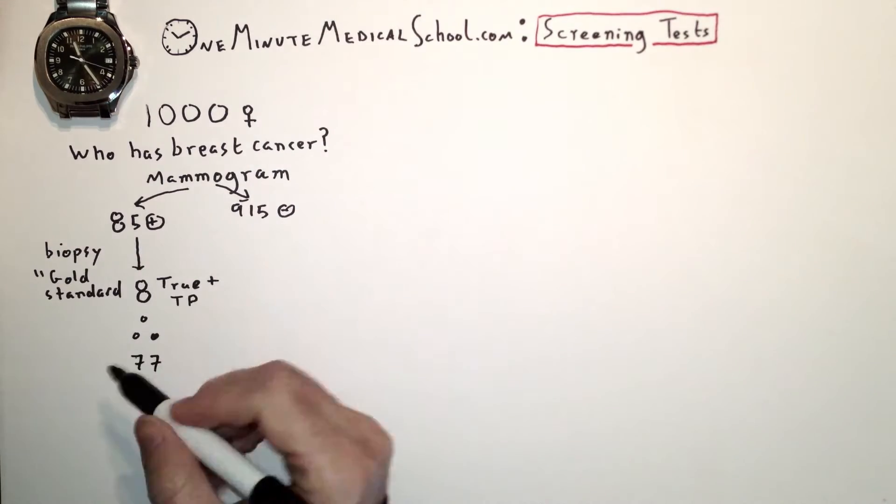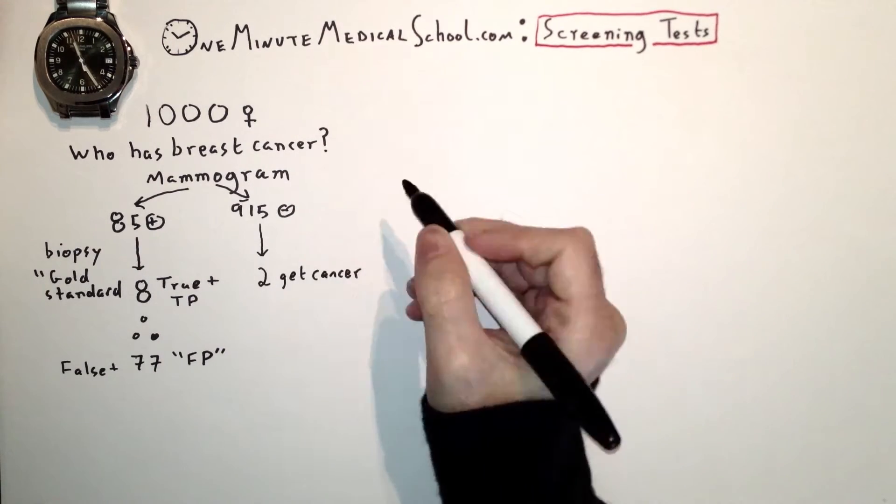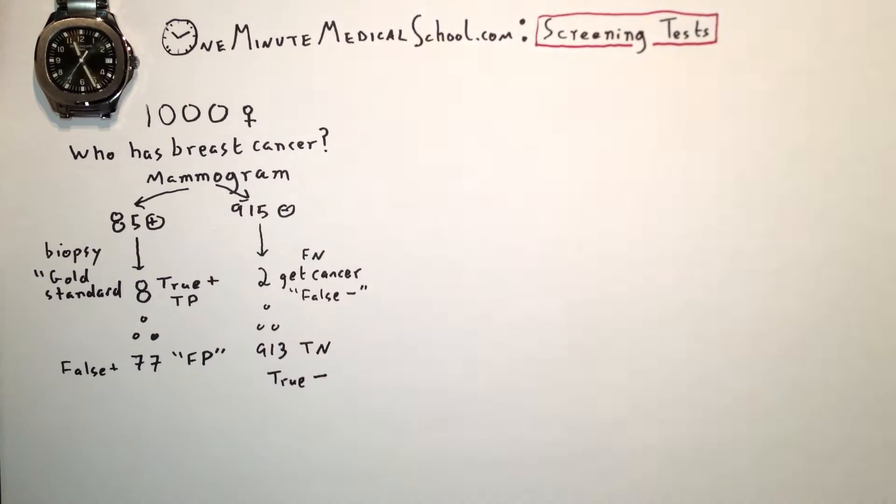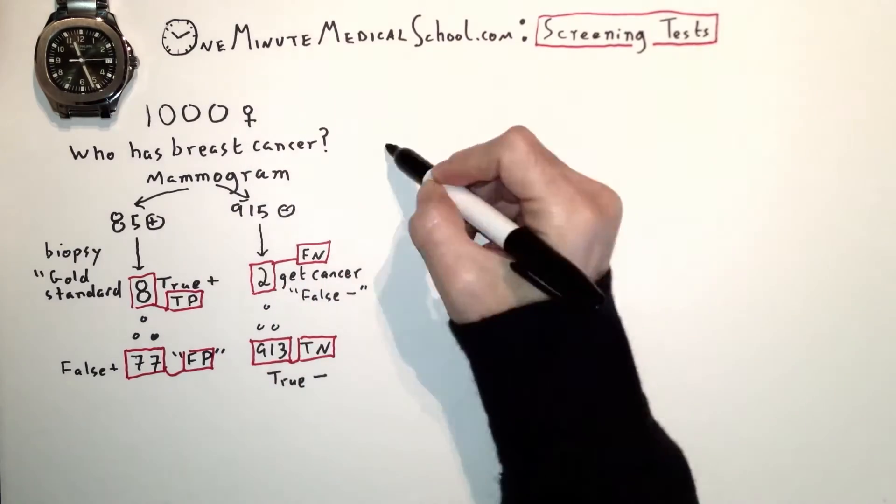If we biopsy those, 8 will have cancer, meaning there are 77 false positives. Two of the negatives get cancer, meaning 913 true negatives.